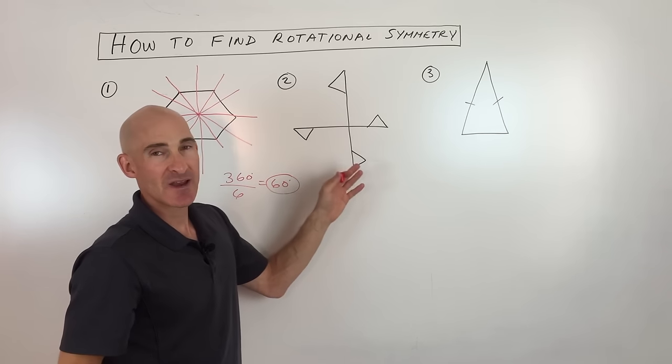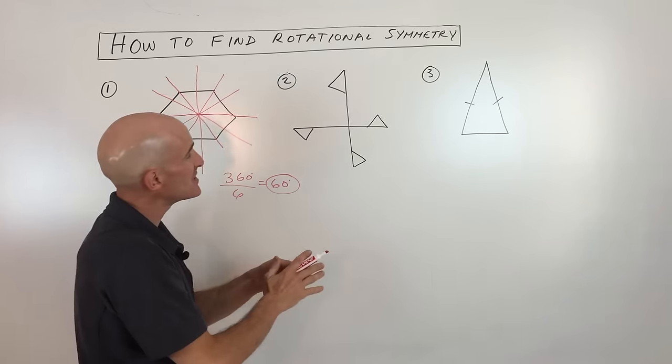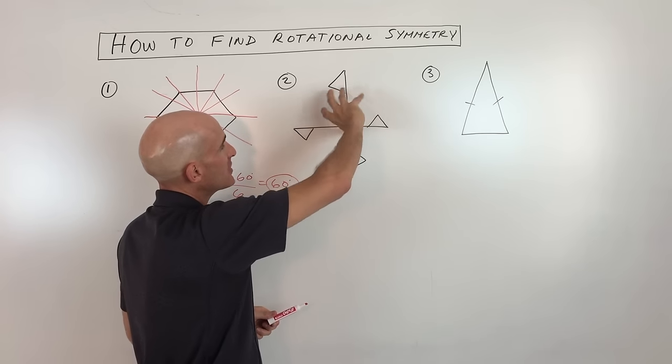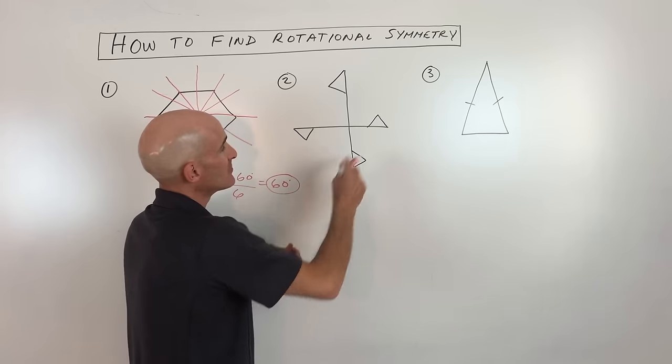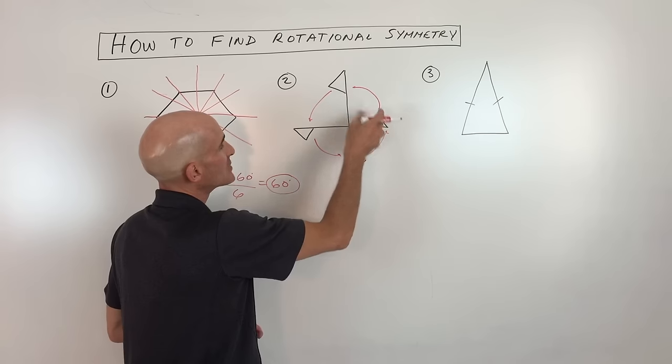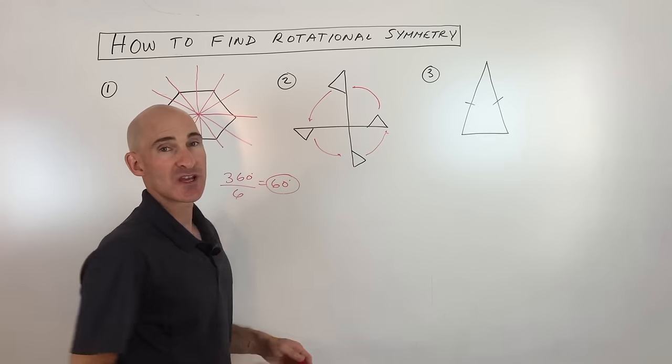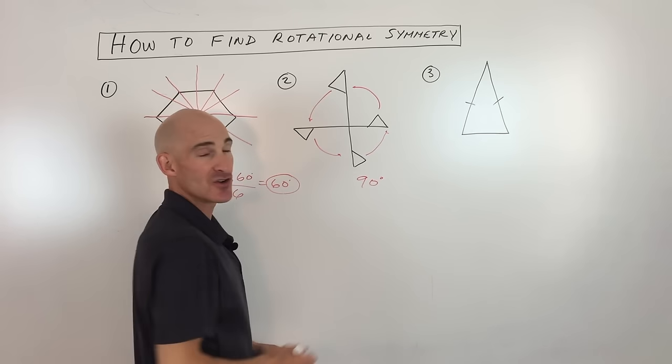And so this one, we can't really solve it the way we did this one, but you can still see that if you were to take this object and turn it a quarter turn, 90 degrees, that this flag or triangle is going to then match up with this one, this one's going to match up with this one, and so on. And so by doing a 90 degree turn or rotation, this will match to itself. So this does have rotational symmetry, 90 degrees.